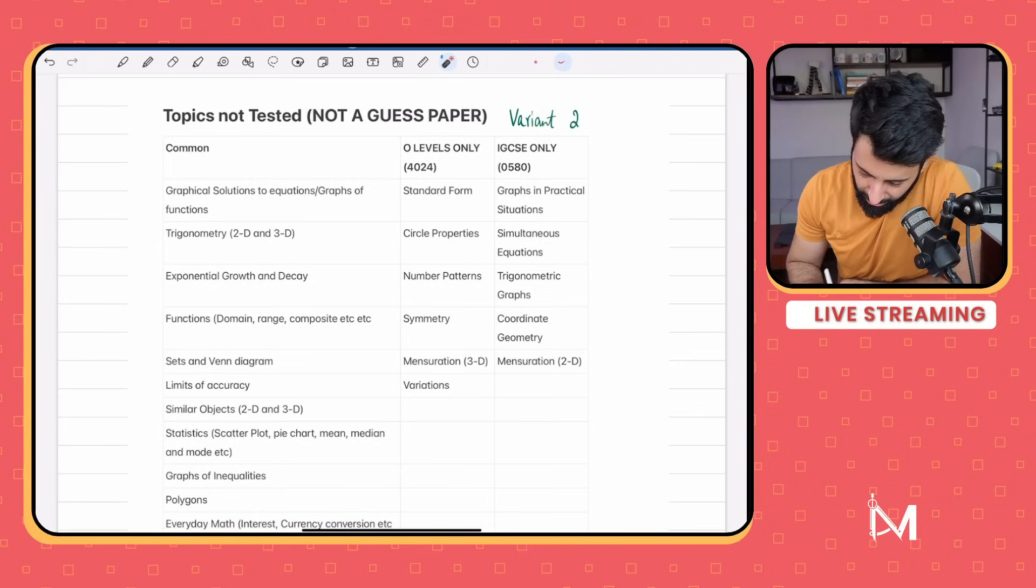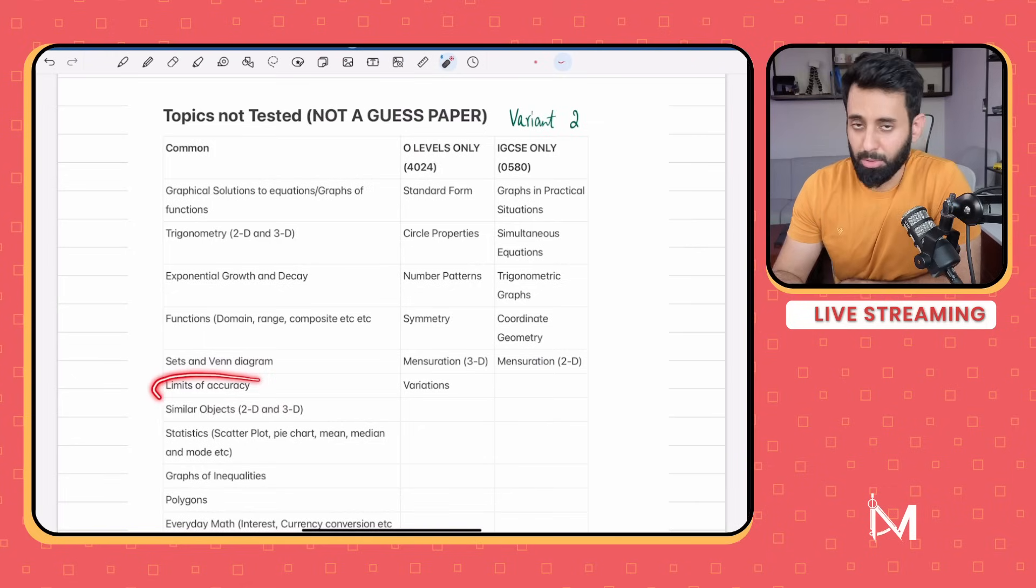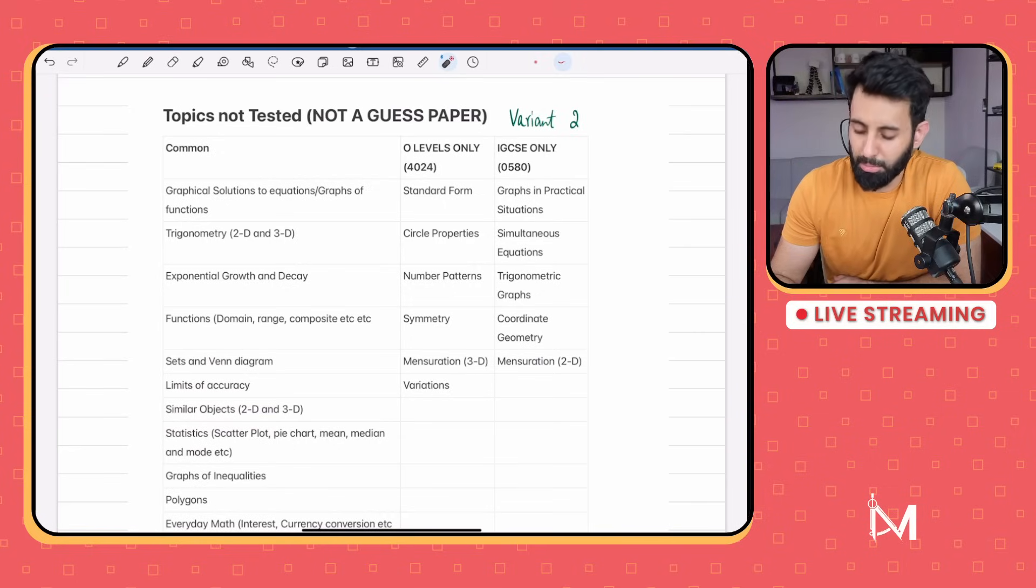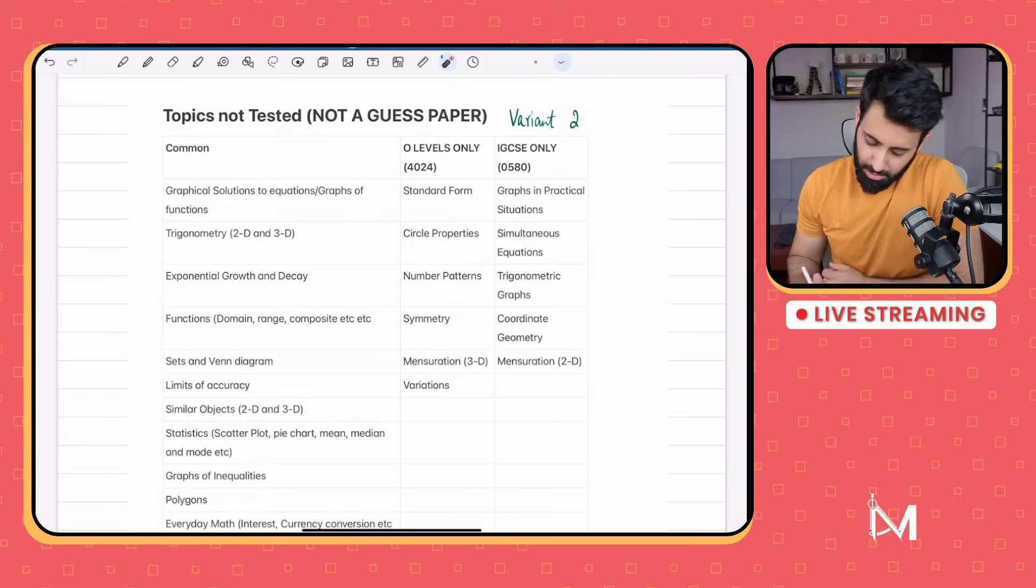Sets and Venn diagram - again no sign of sets and Venn diagram in O-levels or IGCSE. Limits of accuracy, this is basically upper bound, lower bound, no sign of it in O-levels or IGCSE. Similar objects - could be similar triangles, volume, similar triangles or similar 3D shapes. No sign of it in O-levels or IGCSE. There was a question in vectors where you maybe had to use this concept, but there hasn't been a standalone question on similar triangles, so expect this to come in the following paper.